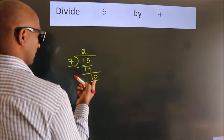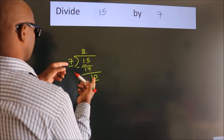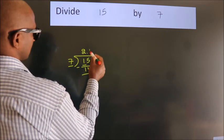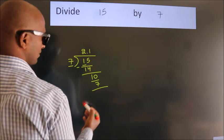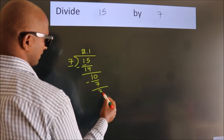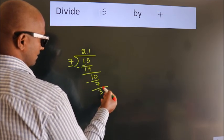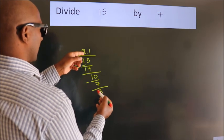So 10. A number close to 10 in the seven table is seven ones, seven. Now we subtract, we get three. After this, we already have the decimal.